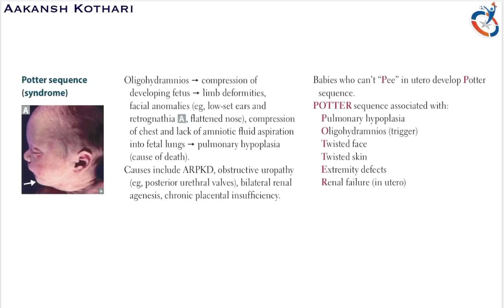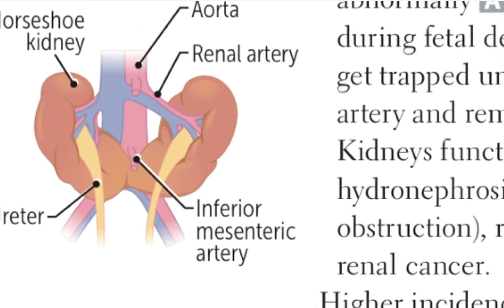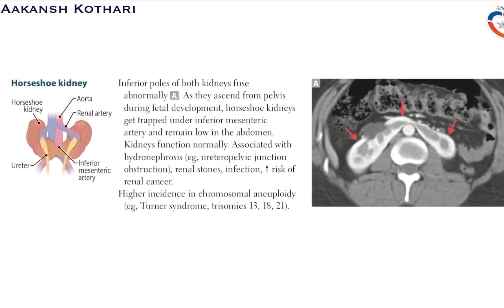The next congenital pathology is the horseshoe kidney. Both kidneys fuse at their inferior pole, forming a horseshoe shape. This occurs as the kidneys ascend from the pelvis during fetal development. Horseshoe kidney is majorly caused by trapping under the inferior mesenteric artery. The kidneys function normally but are associated with hydronephrosis, renal stones, increased infection, and increased risk of renal cancer.